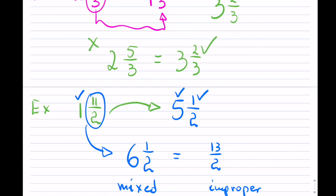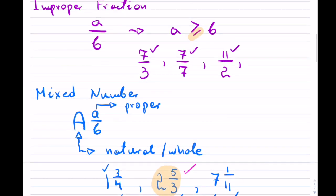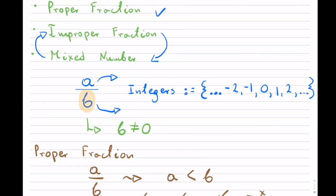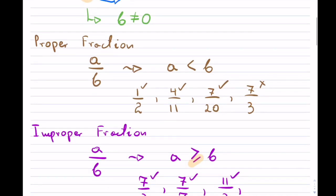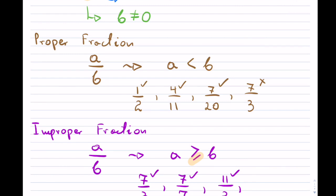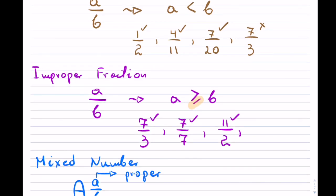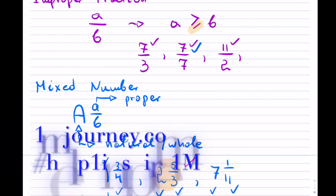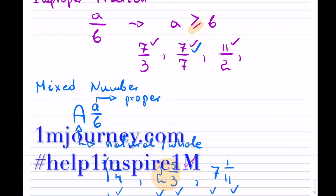So we have gone over, in this video, proper fraction, improper fraction, and a mixed number. Proper fraction: the numerator is smaller. Improper fraction: the numerator is bigger or equal. And a mixed number is made up of a whole component plus a proper fraction. Thank you for watching.